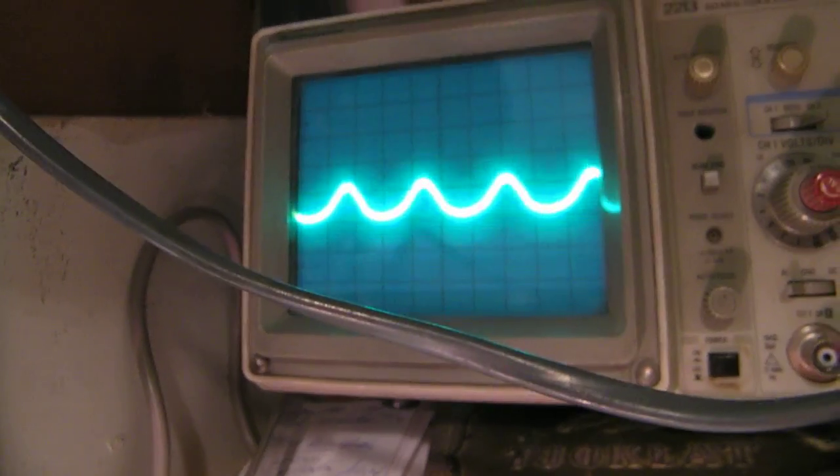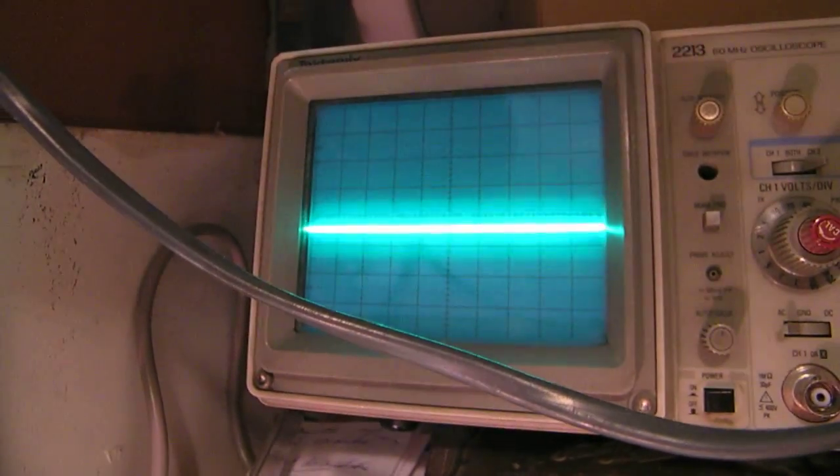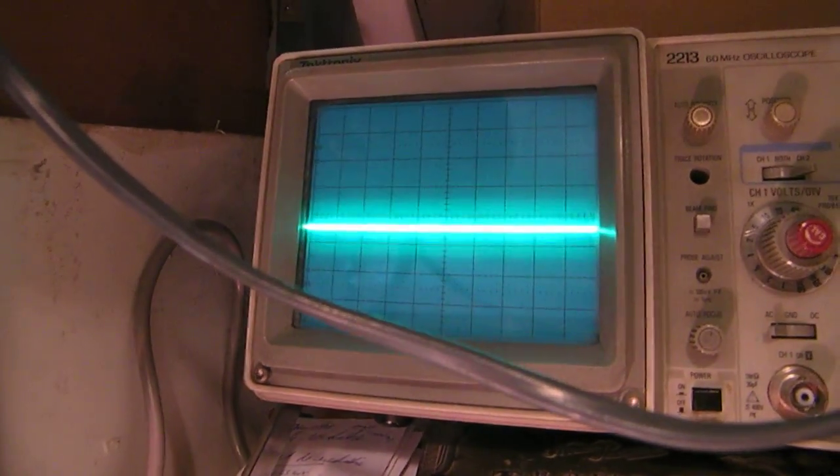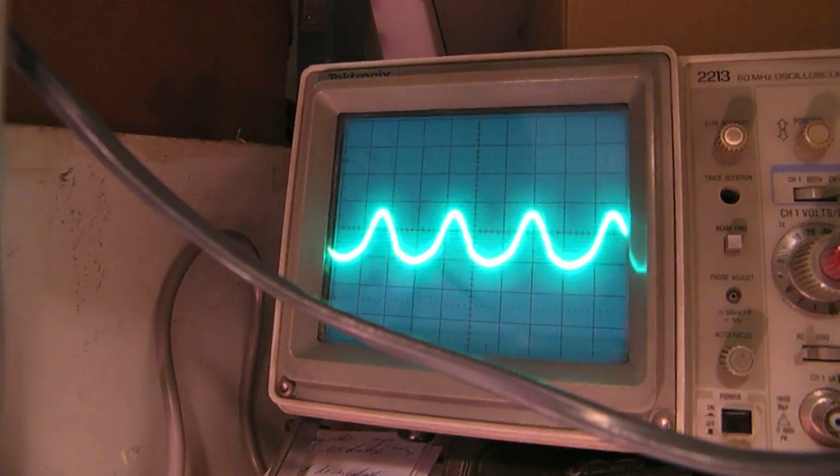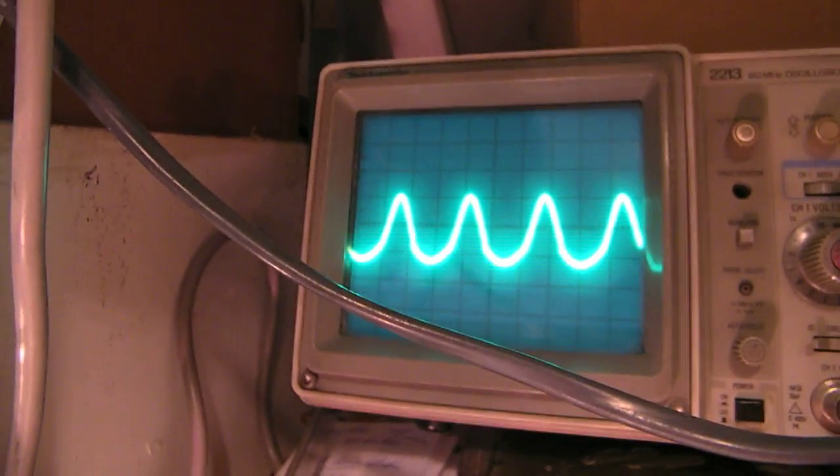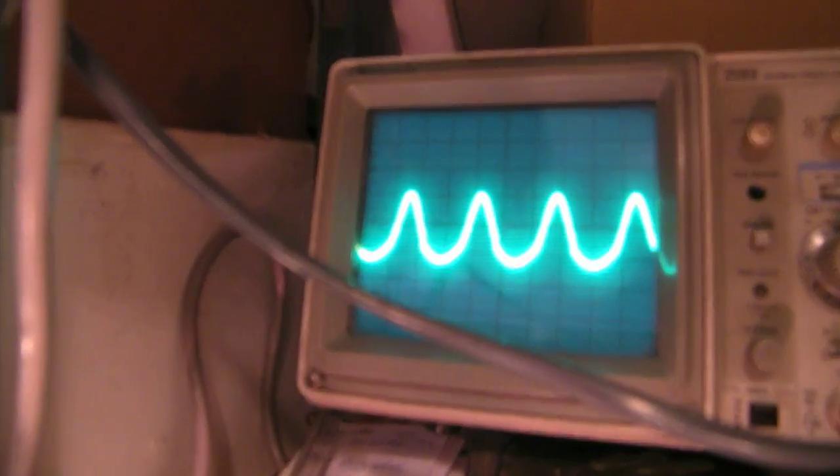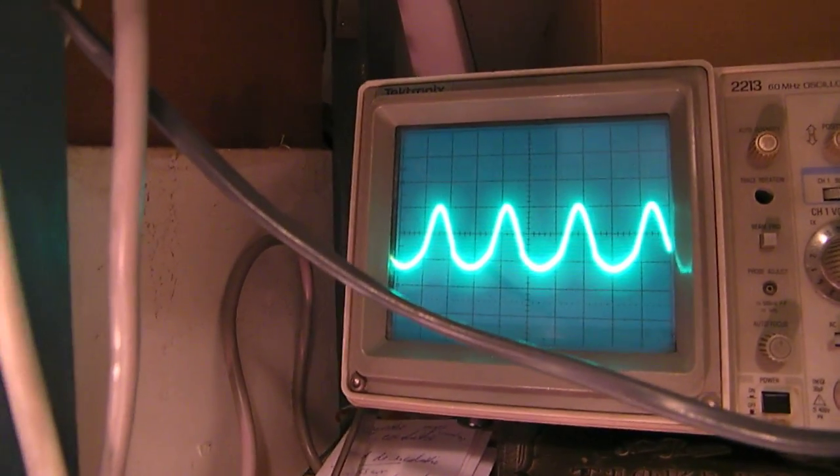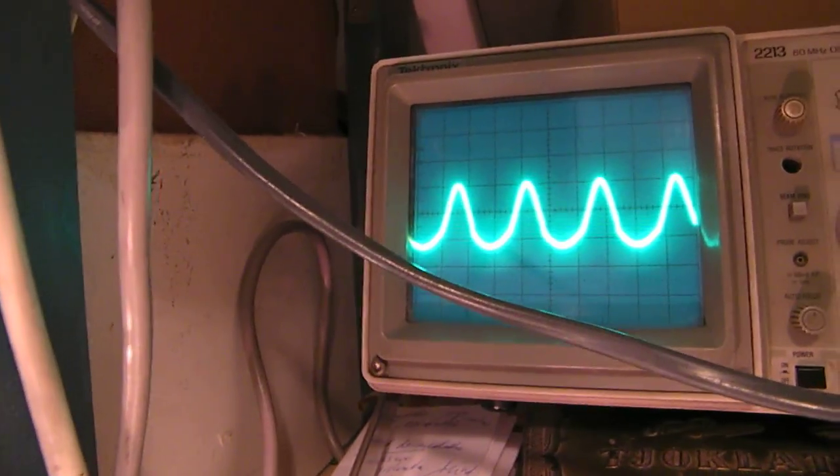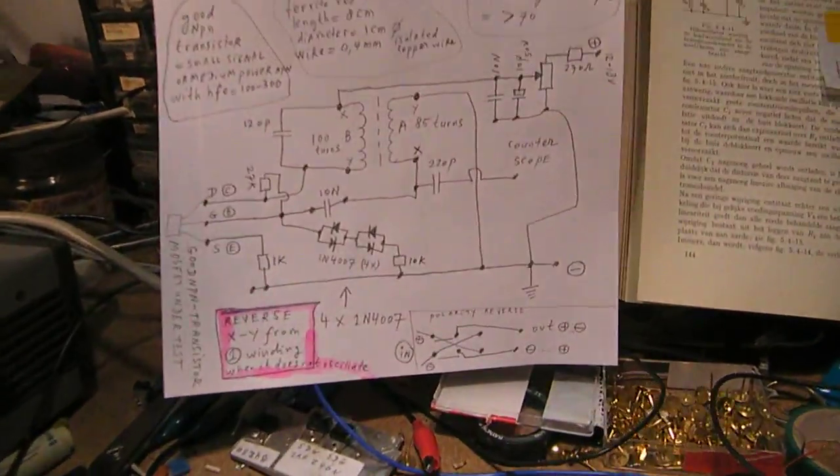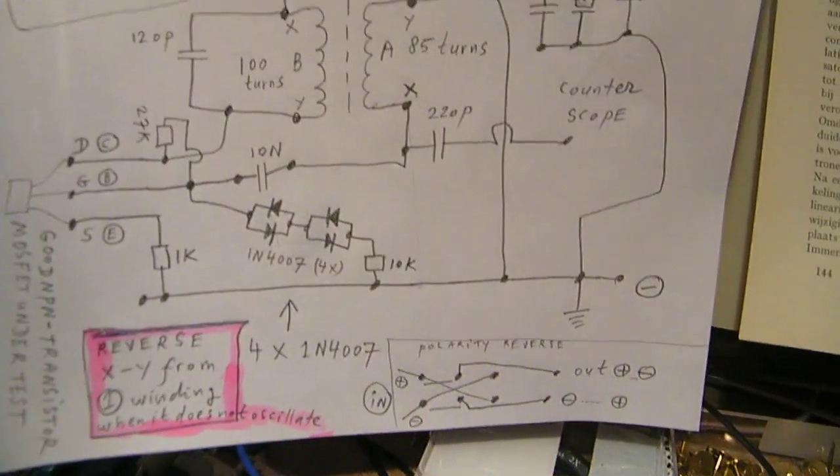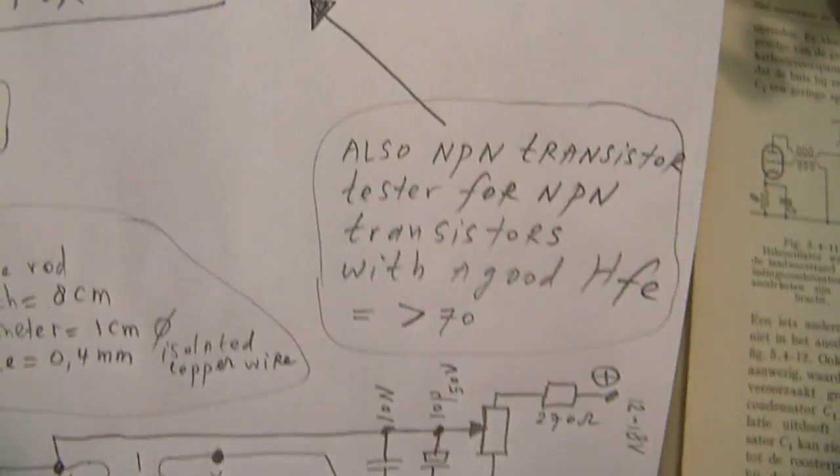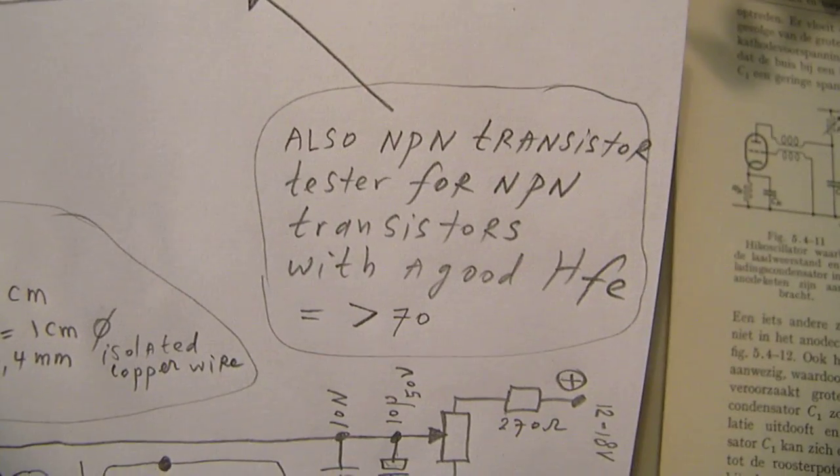When I change the value from the potentiometer, the oscillator gets more or less voltage added. That of course means that it oscillates or does not oscillate. And again, the peculiar thing: also NPN transistors work.